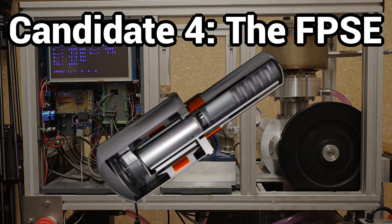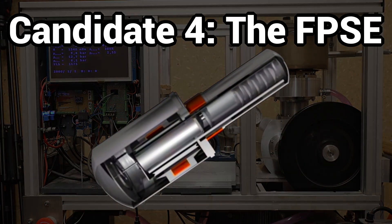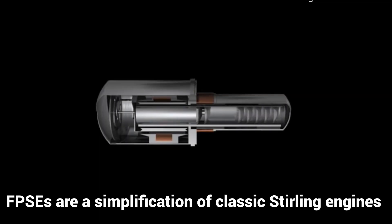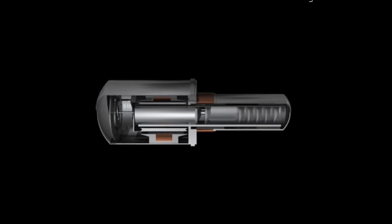Free piston Stirling engines do not have a kinematic drive mechanism and are therefore much simpler with less friction and wear. They require no rolling or plain bearings and the only moving parts are the piston and the displacer.